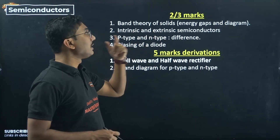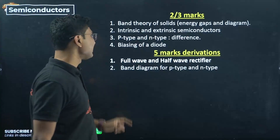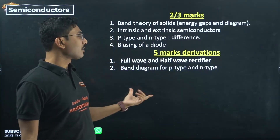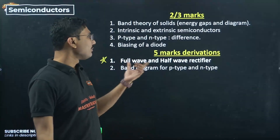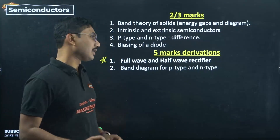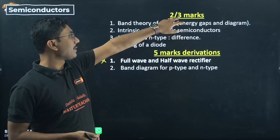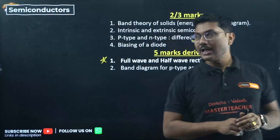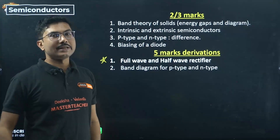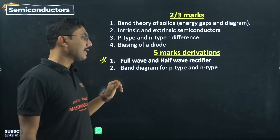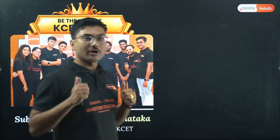Semiconductors does not have very high weightage, but questions are predictable so do not skip it. Key topics: band theory of solids with energy gap diagram; intrinsic and extrinsic semiconductors; p-type and n-type semiconductors and their differences; biasing of a diode. Full wave and half wave rectifier — there is a 99% chance this will be a 5-mark question and it is easy to prepare for guaranteed marks. Band theory combined with band diagrams for p-type and n-type semiconductors forms a 5-mark combination question, so prepare them together.